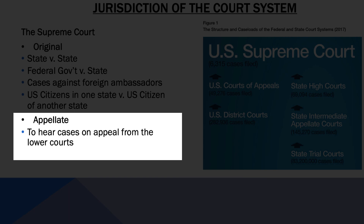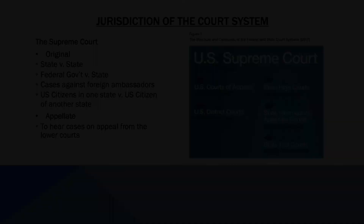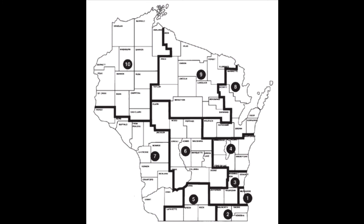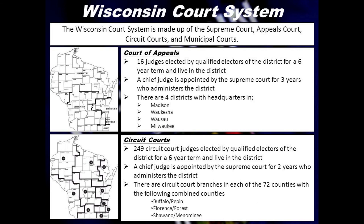Quite similar to congressional districts, each state also has a number of judicial districts that help organize the division of labor in hearing criminal and civil cases. Each state is responsible for organizing their own court systems, so court structure varies state to state. For example, the Wisconsin court system is divided into a state Supreme Court, appeals court, circuit or district courts, and municipal courts. Within the municipal courts there are a variety of different criminal and civil courts that each hear specific types of cases. Cases involving more serious crimes are heard at higher levels, like the state circuit court.